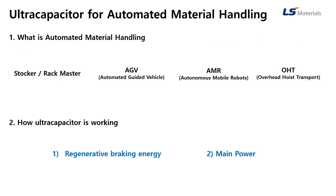Now let me explain how Ultra Capacitor is working for these applications. Ultra Capacitor is used in two ways: first, to use regenerative braking, and second, as a main power source.